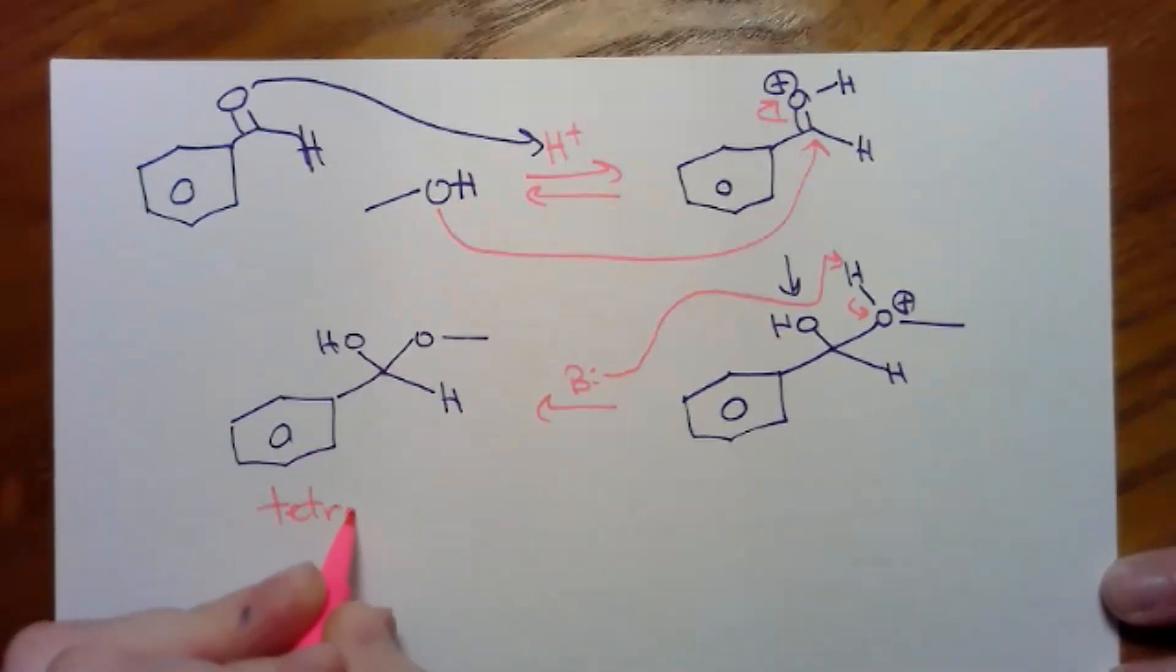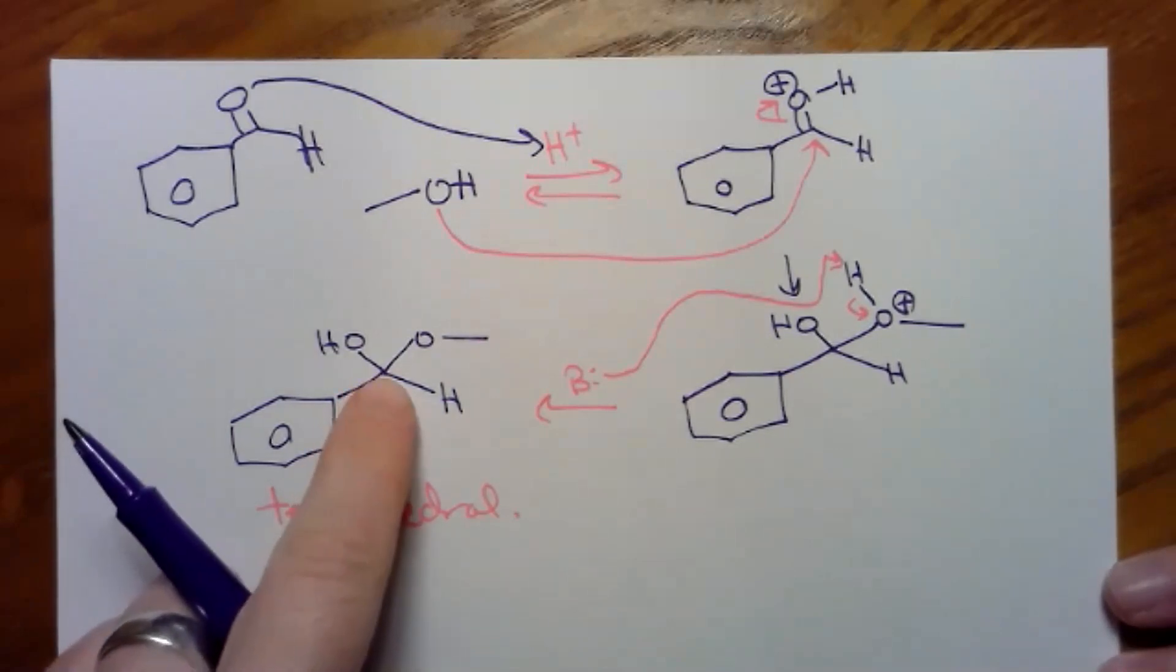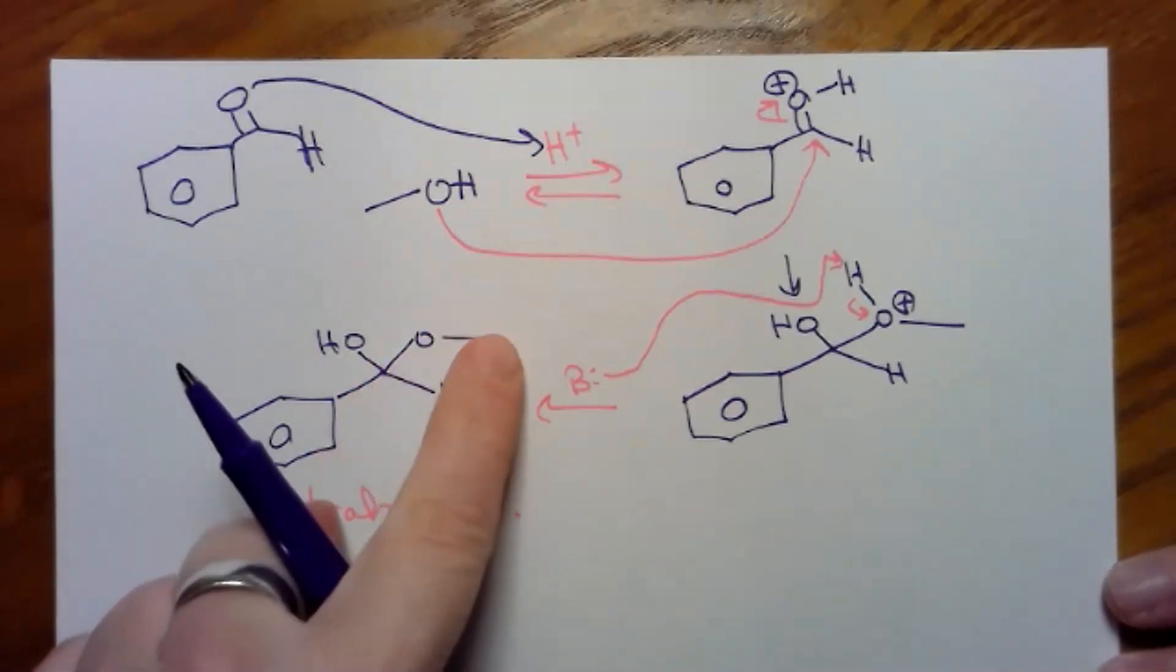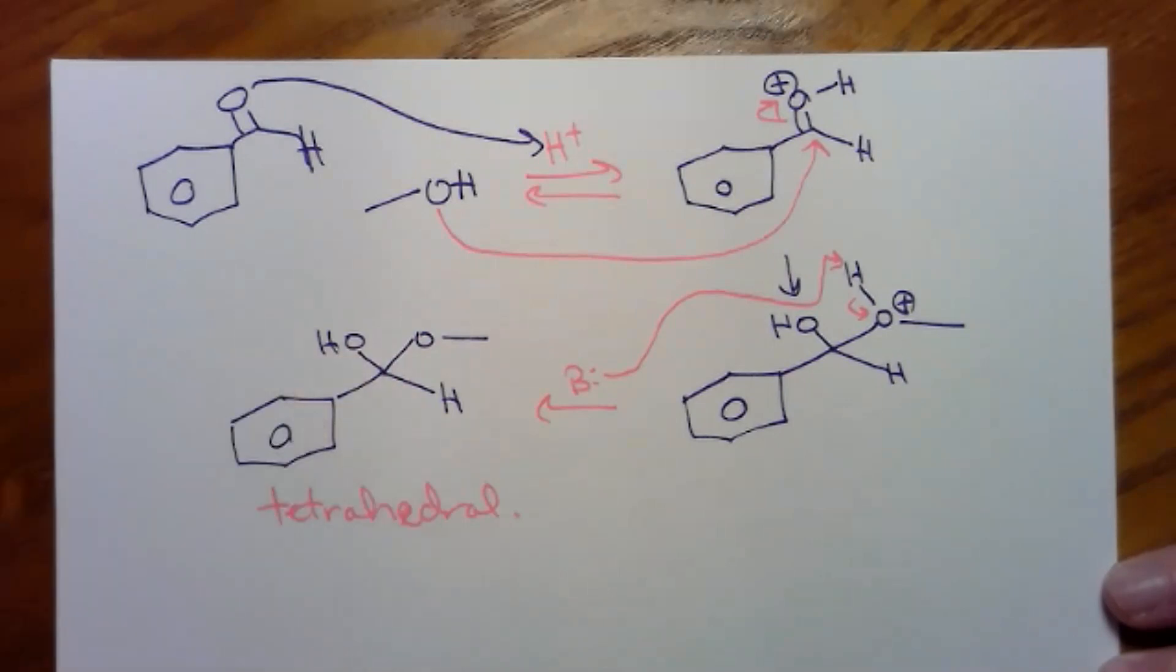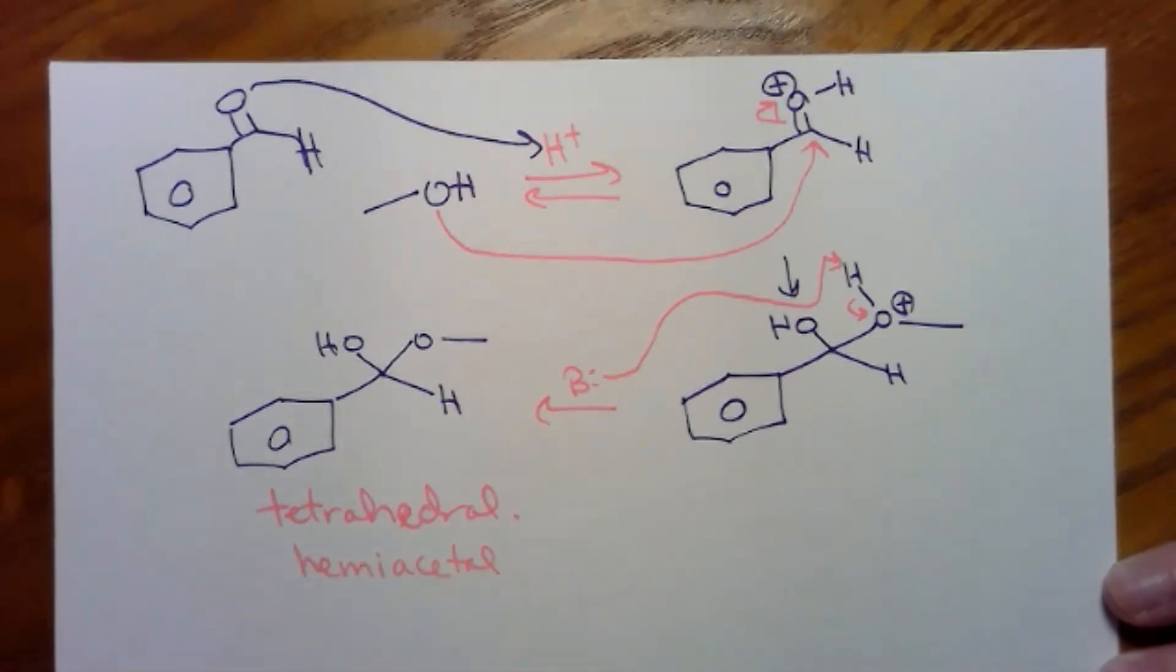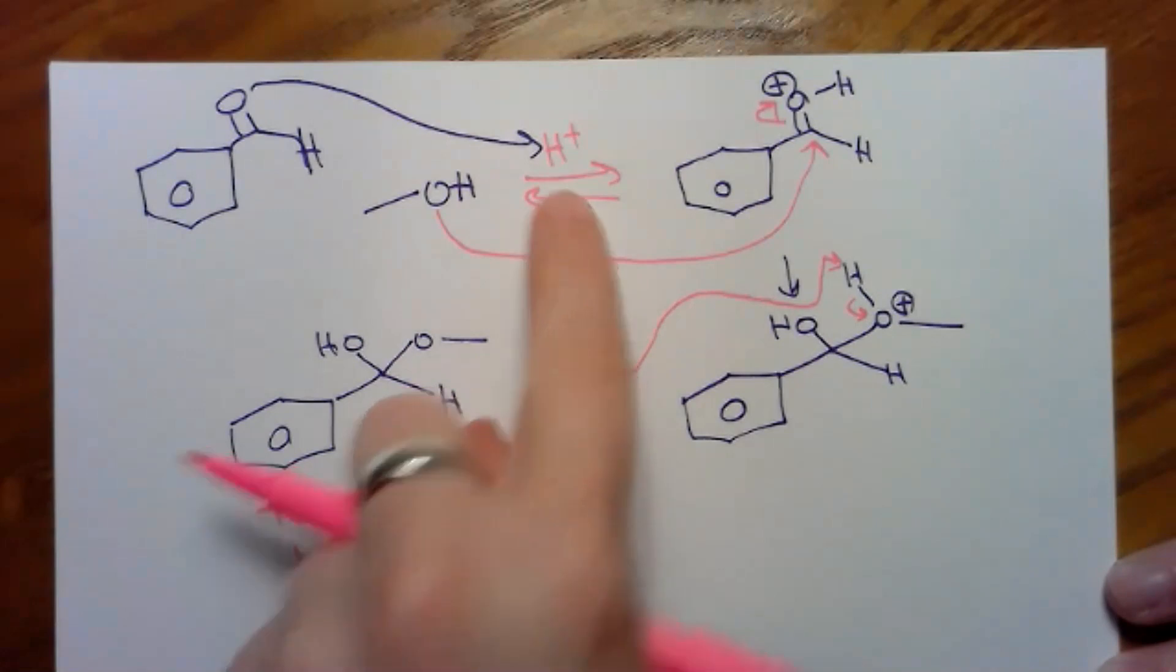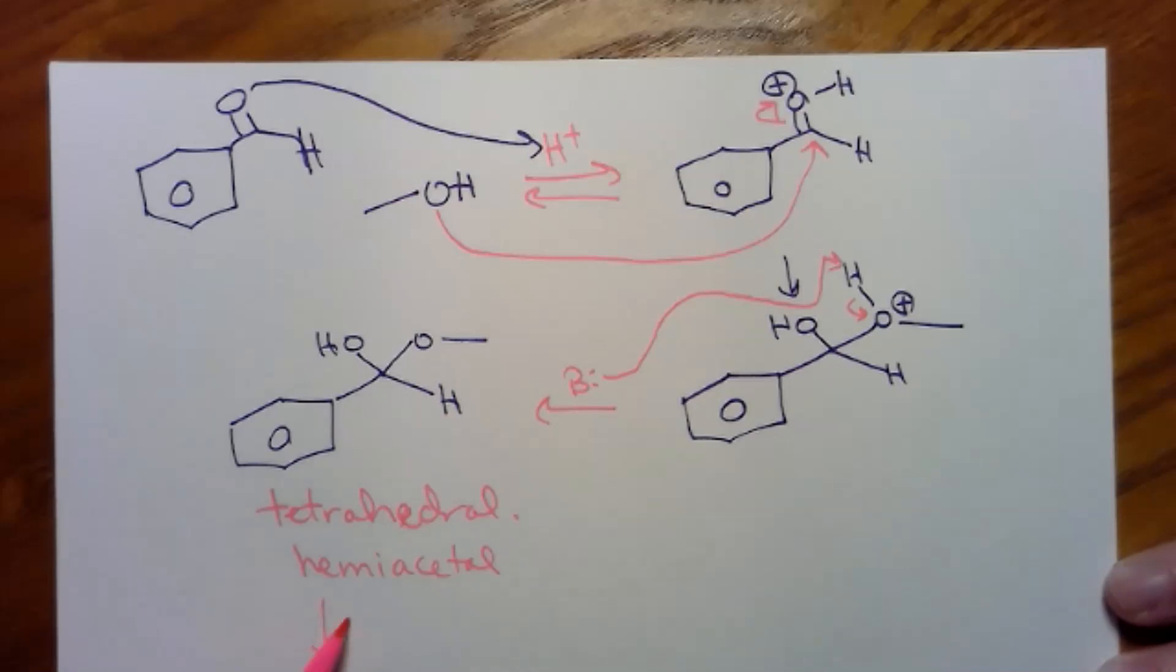This is a neutral tetrahedral intermediate. Why is that important for me to point out this time? Well, this thing is a carbon with an OR, a carbon with an OH. This is a hemi. It's a half acetal. Half I ain't got a hemi? You should look up that commercial if you don't understand that reference. When you're in acid, you can't stop at a hemiacetal. It's not allowed. Do not pass go. Do not collect $200. Do not stop. You got to keep going.